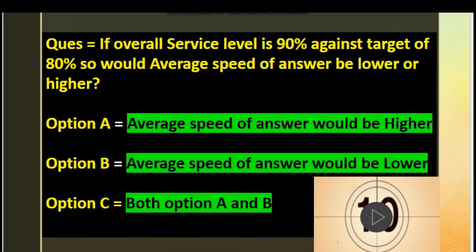The second question is: if overall service level is 90% against a target of 80%, would average speed of answer be lower or higher? Option A: average speed of answer would be higher. Option B: average speed of answer would be lower. Option C: both option A and B.